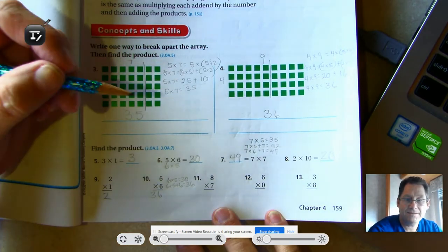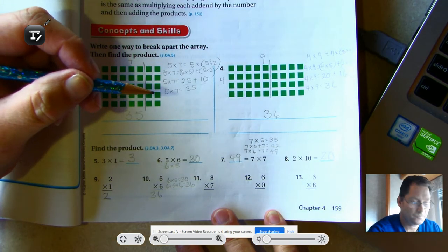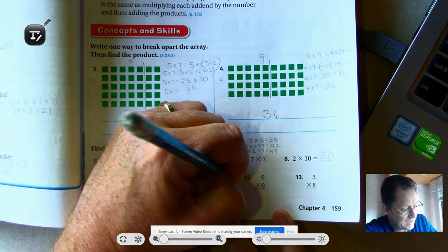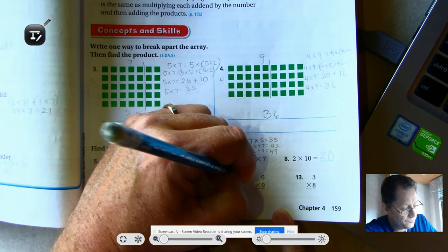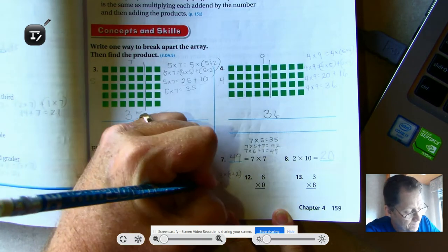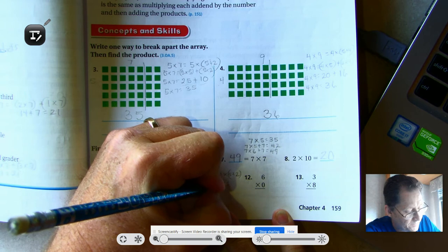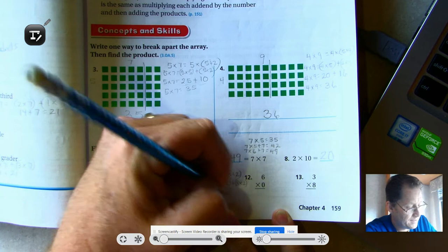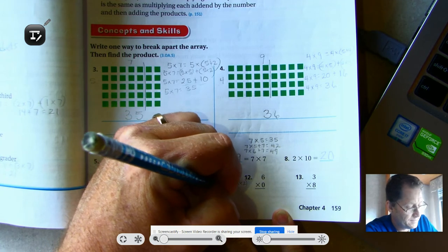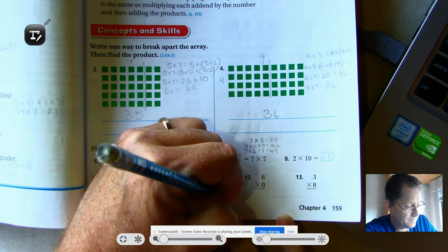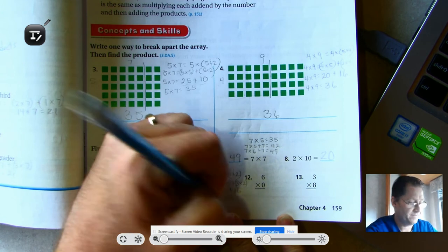Eight times seven is the same as eight times five plus two. So we can use the distributive property on this problem. Eight times five plus eight times two. Eight times five is 40. Eight times two is 16. So eight times seven is 56.